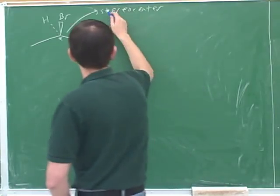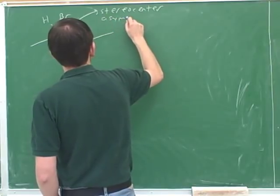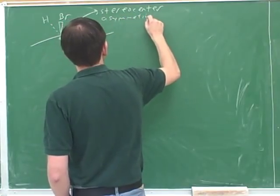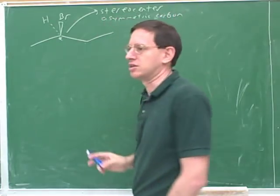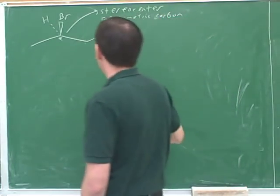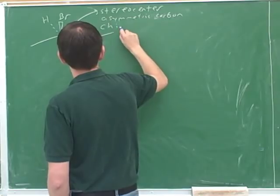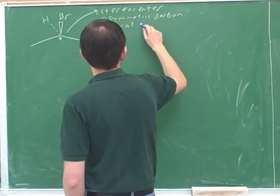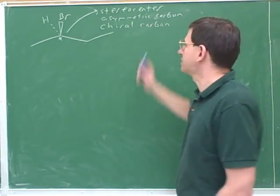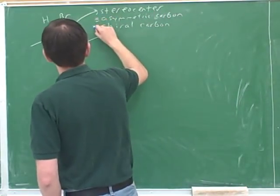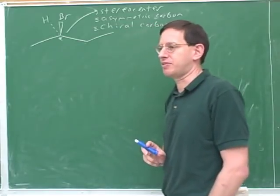Another name for a stereocenter is an asymmetric carbon. I don't know if your instructor ever uses that term, but another term is an asymmetric carbon. And another term that I think it sounds like your instructor was using is a chiral carbon, or maybe a chiral center. So these are all synonyms. I'll put in identity symbols here. These all mean the same thing.